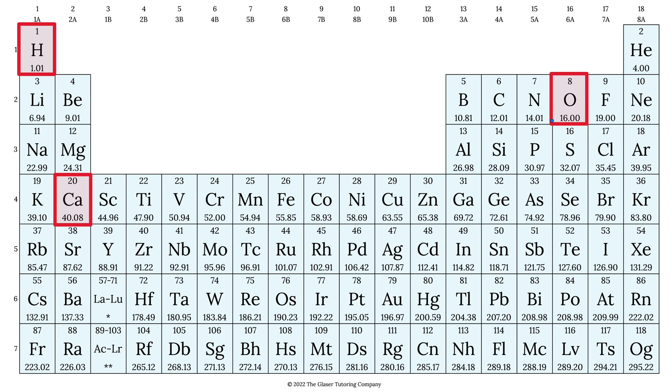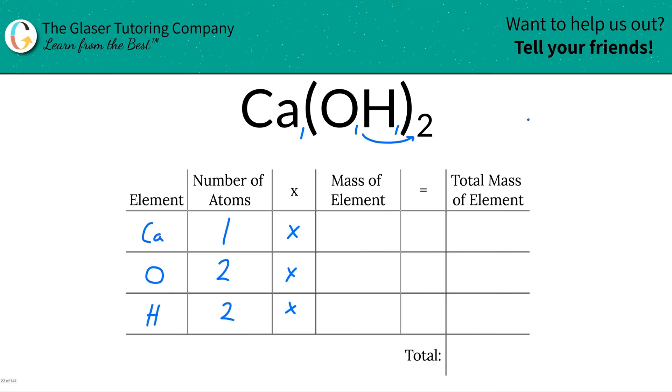and oxygen is 16. Those represent gram per mole if you're finding molar mass, or AMU if you're finding molecular mass. So let's write them in. So calcium is 40.08, oxygen has a value of 16, and then hydrogen has a value of 1.01. So we just write the masses of those elements singularly.